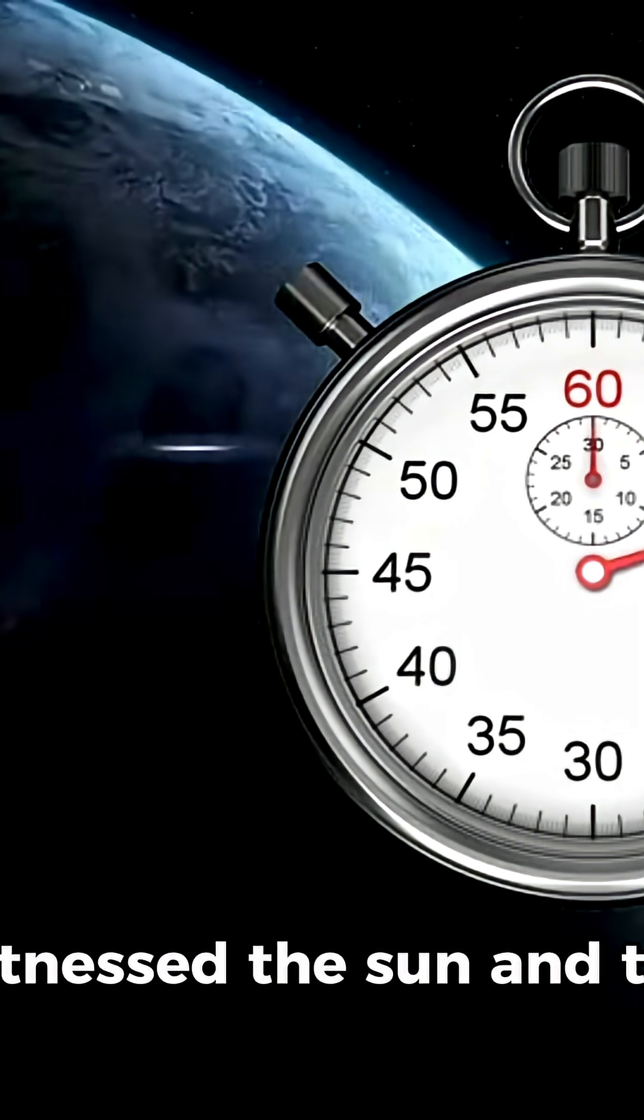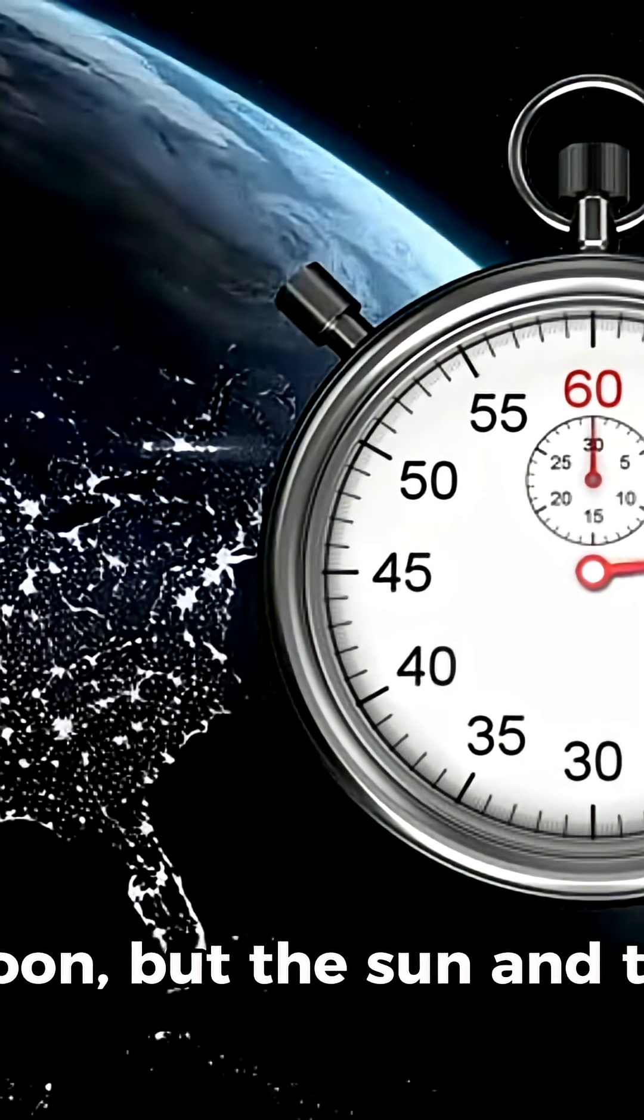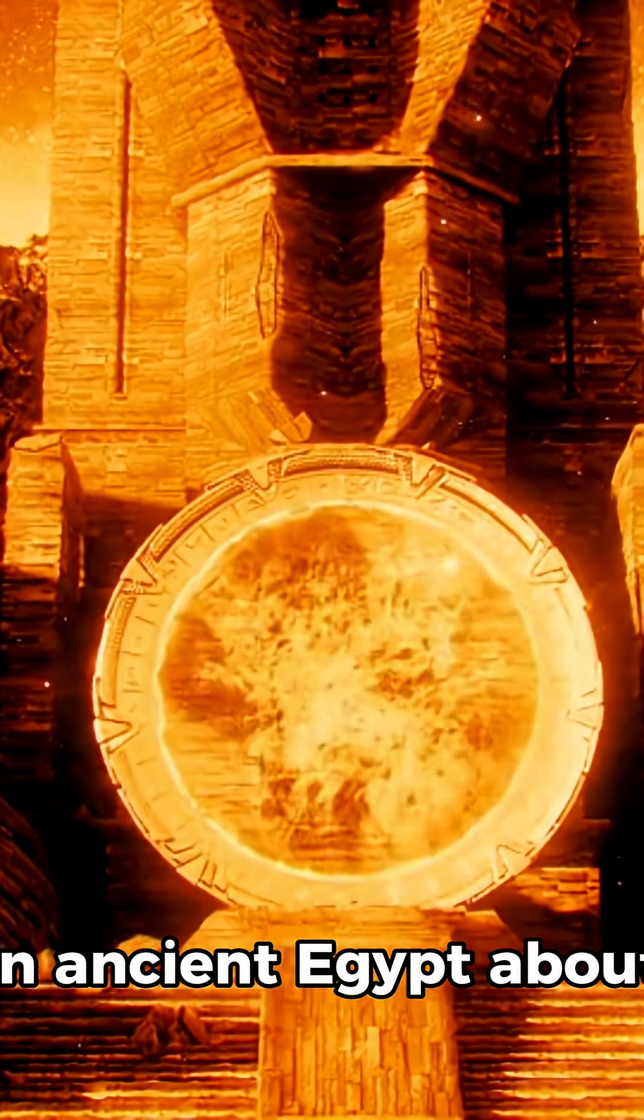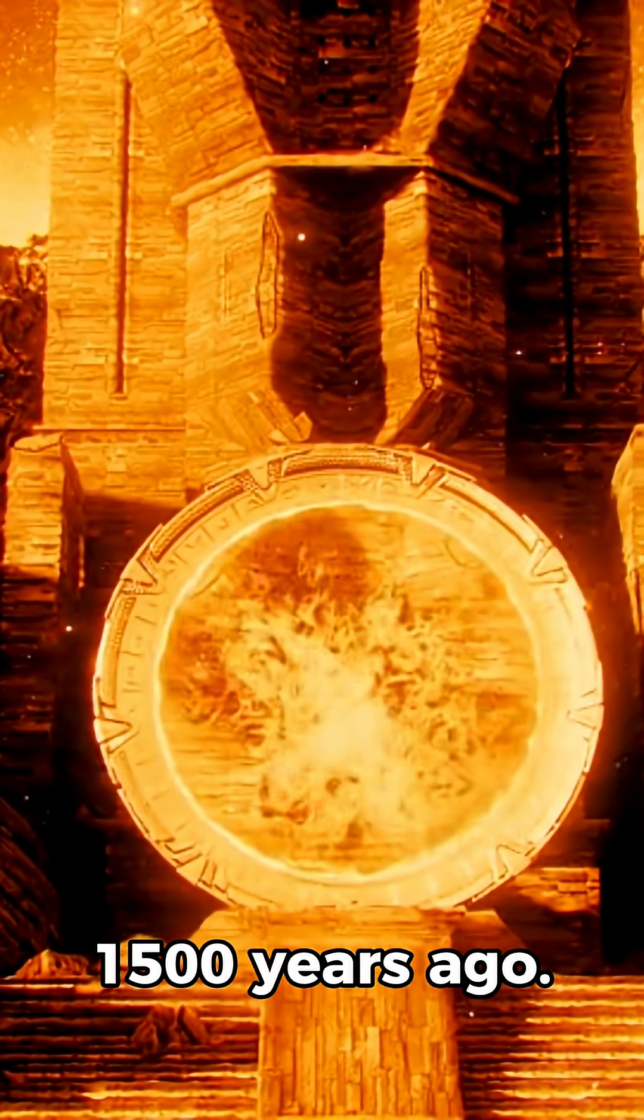They observed the sun and the moon, but these changed every day, so humans found another way. The sun clock was invented in ancient Egypt about 1,500 years ago.